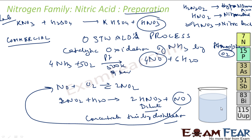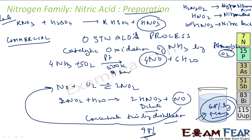The normal industrial nitric acid is 68% by mass — please remember this number. This is the commercial nitric acid. If you want further concentration, you can achieve 98% by mass nitric acid by dehydration with concentrated sulphuric acid.